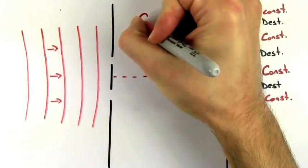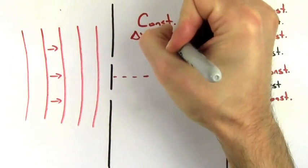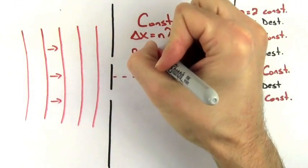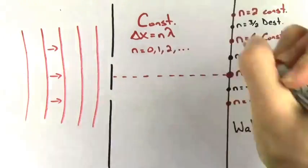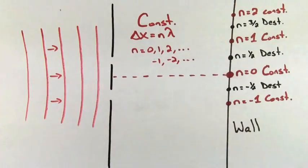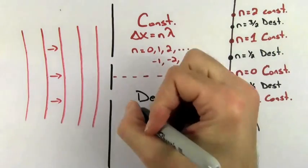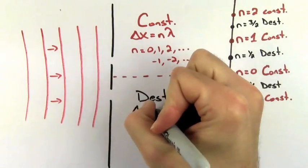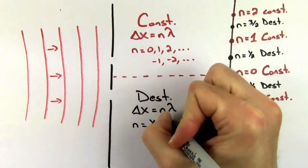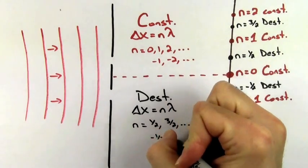The bright constructive points all satisfy the condition that the path length difference is equal to n times lambda, where n is an integer like zero, one, two, or even negative one, negative two, and so on. The dark destructive points also satisfy the condition that the path length difference is equal to n times lambda, but n has to be a half integer like one half, three halves, negative one half, and so on.